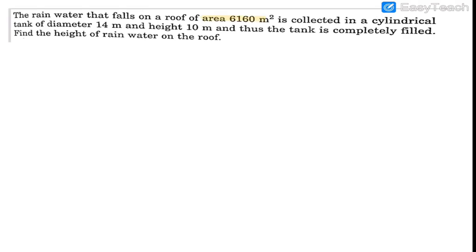Hello everyone, welcome to my channel. The question is: the rainwater that falls on the roof of area 6160 meter square is collected in a cylindrical tank of diameter 14 meter and height 10 meter, and thus the tank is completely filled. Find the height of the rainwater on the roof.